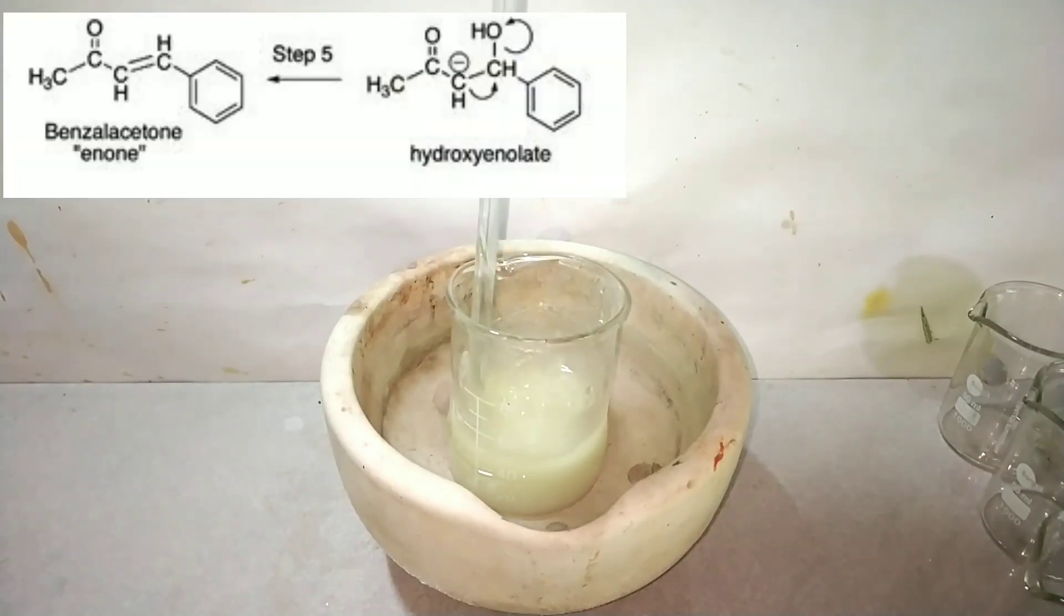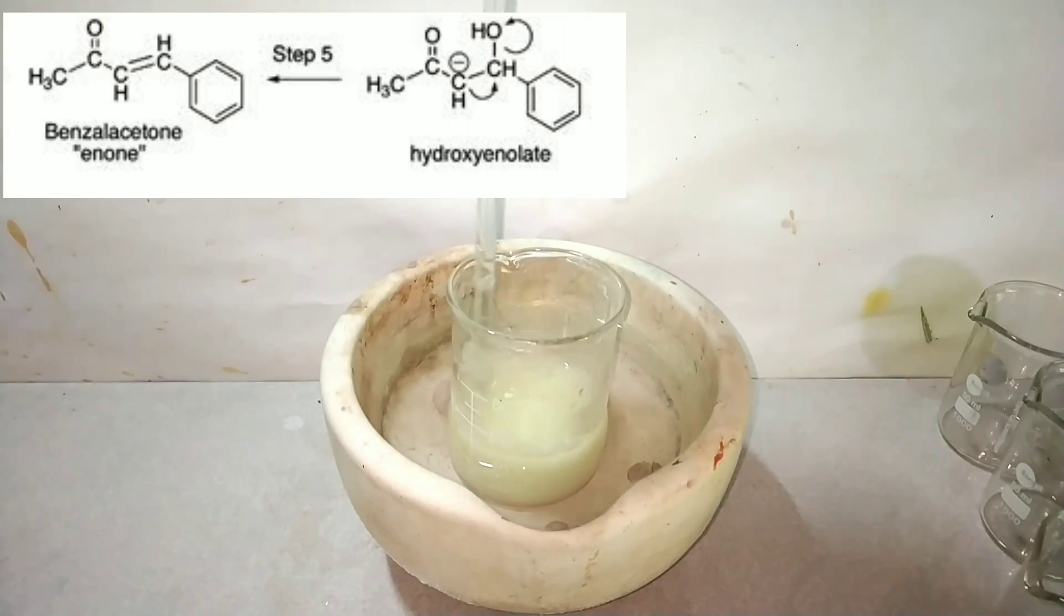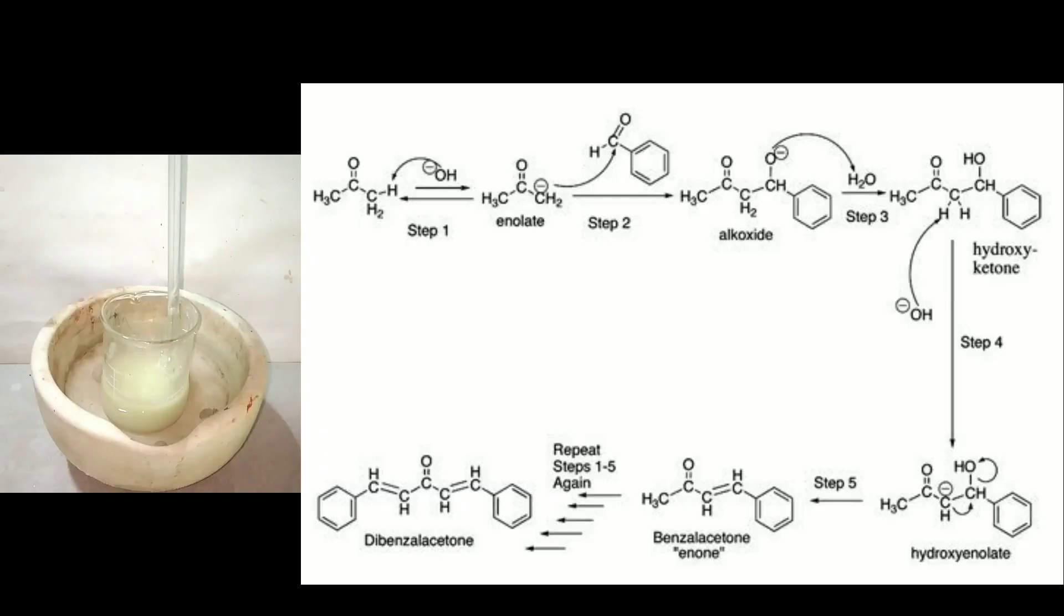The electrons move to form a double bond which then removes the hydroxyl ion. This again regenerates the hydroxyl ion. Now we have benzalacetone intermediate. The steps get repeated on the other alpha hydrogen of the acetone to form our final product, dibenzalacetone.